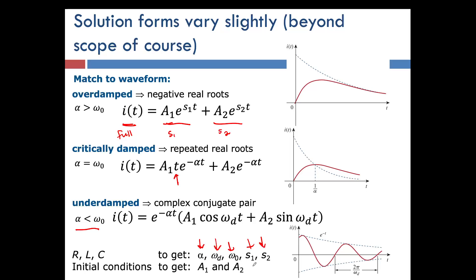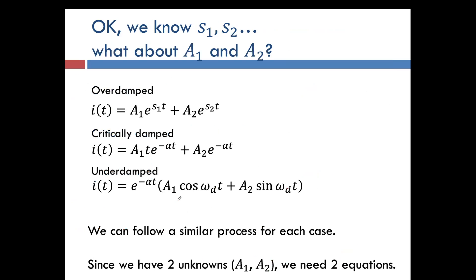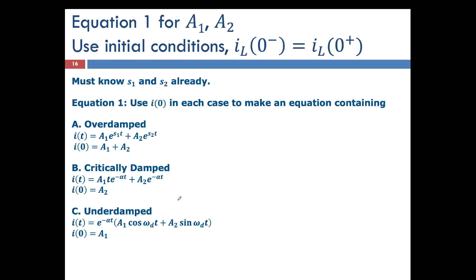So the last things that we need to talk about before the end of this video are how to get A1 and A2, because those appear in each one of these solutions. So A1 and A2, they appear in each case. We have two different ones, we have two unknowns, that means we need two equations to solve for this. Well where are we going to get those equations? Let's use our initial conditions. So the first initial condition that we have comes from the inductor, and if we know the inductor at 0 minus and 0 plus, we can take that, I at 0, so this is 0 plus, and you can get equation 1 that includes A1 and A2 as your unknowns. You can do that for each case, overdamped critical and underdamped case.